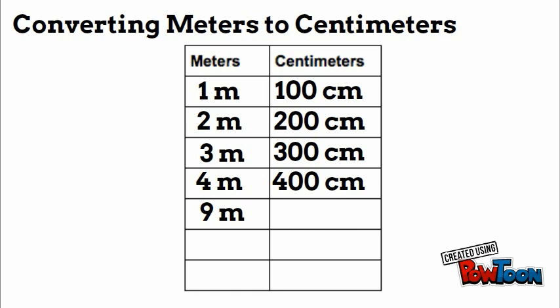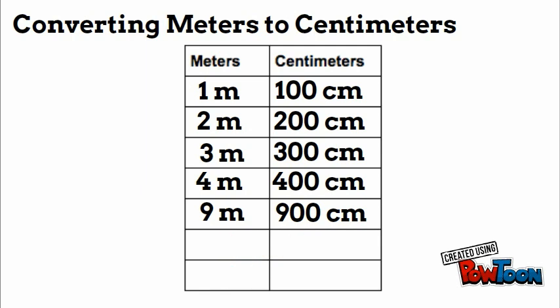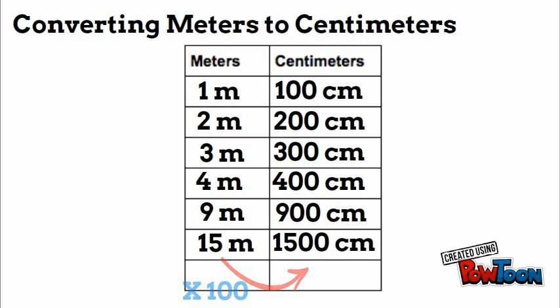We know there are 100 centimeters per meter, so we can multiply by 100. Nine times 100 is 900 centimeters. If we wanted 15 meters turned into centimeters, multiply by 100 and you get 1,500 centimeters. So when converting meters to centimeters, you can always multiply by 100 because one meter is 100 centimeters.